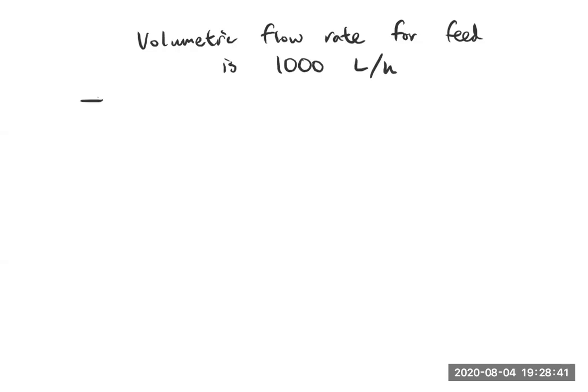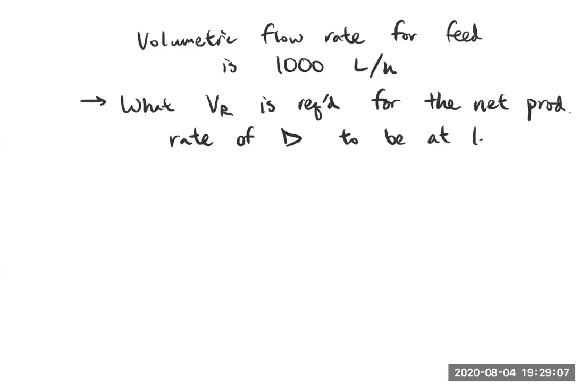And what we want to know is what reactor volume is required for the net production rate of D to be at least 1200 moles per hour.